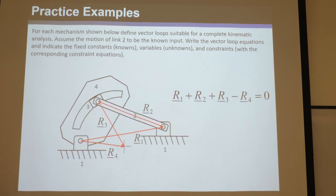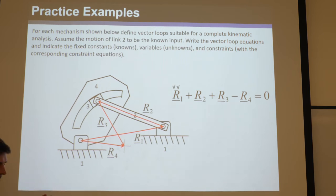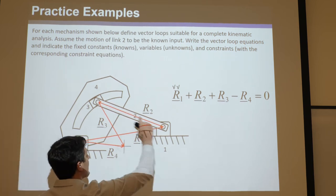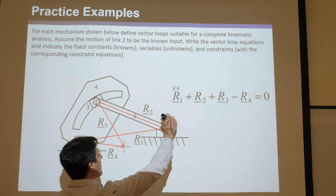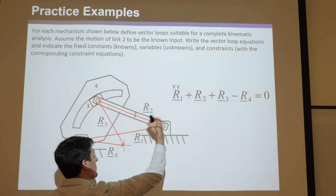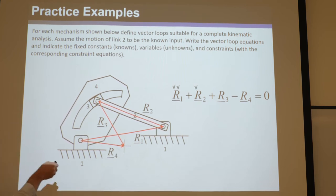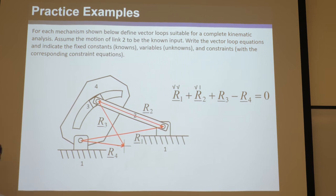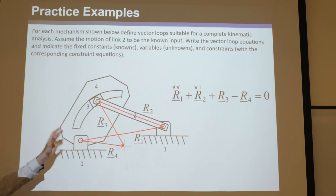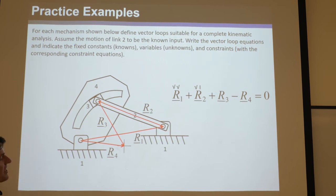Let's go through and see what we know. We know R1 and its angle — it's fixed on the ground and neither will change as theta two changes. There's theta two — the tail of R2 is here, horizontal to there. As theta two changes, you can put a motor on there. The length of R2 is known as well; it's not going to change. Theta two is the input — that's the thing the motor knows. If you did Kutzbach on this, you'd find a mobility of one, so you're just going to have one input.